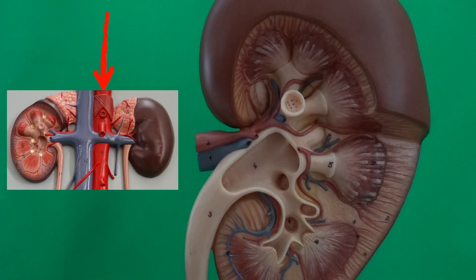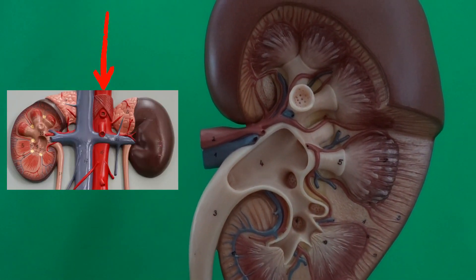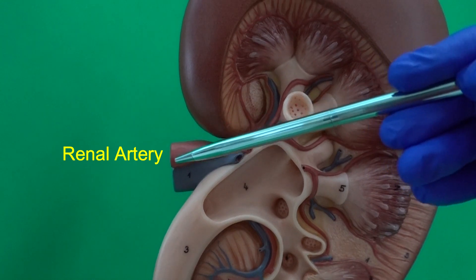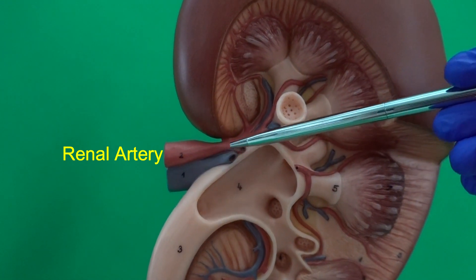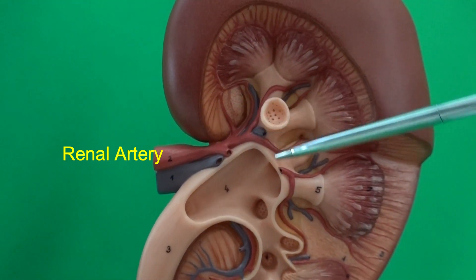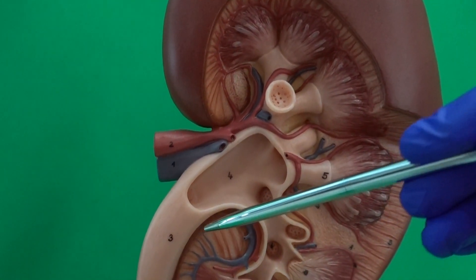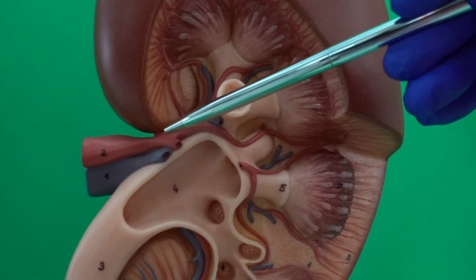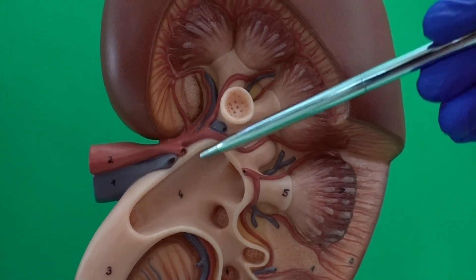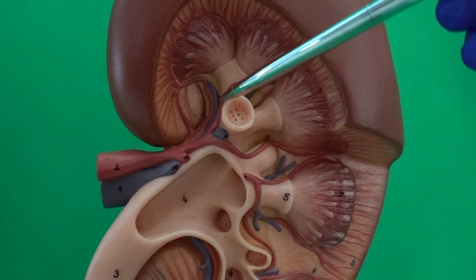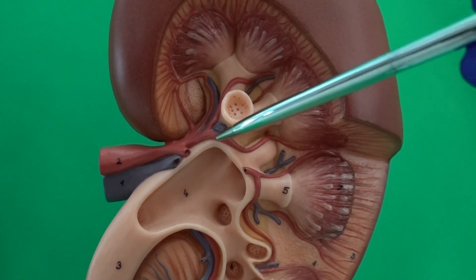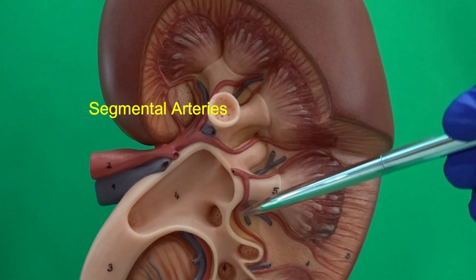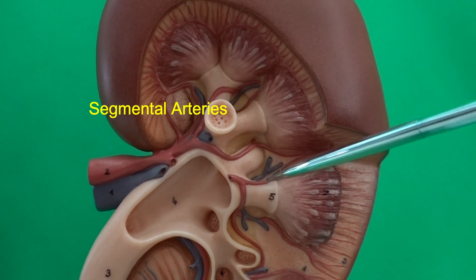Recall from the abdominal aorta, we get two renal arteries. Here we're looking at one of the renal arteries that enters the kidney exactly at the renal hilum. When we follow the renal artery, we see that it divides into some branches. We refer to these branches as segmental arteries because they supply the segments of the kidneys.